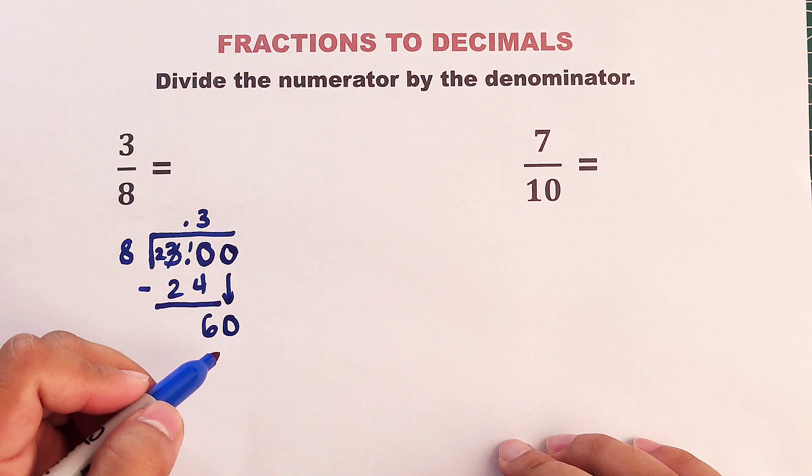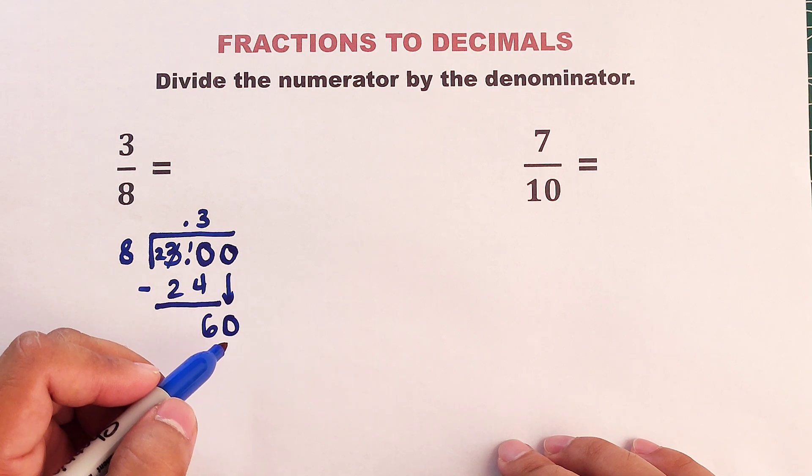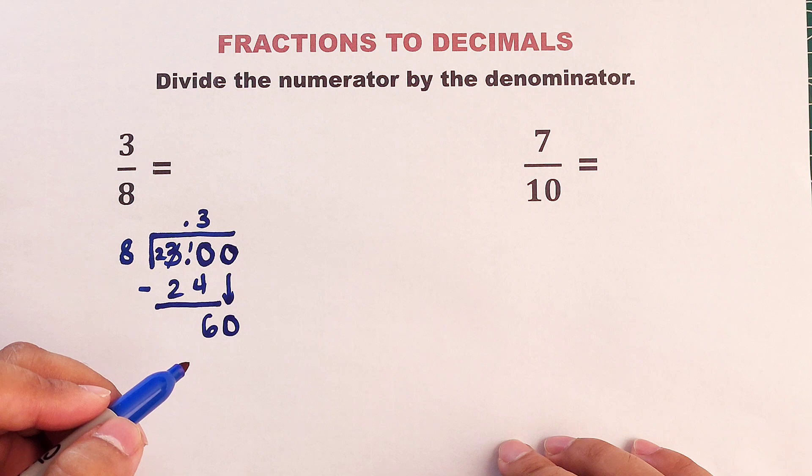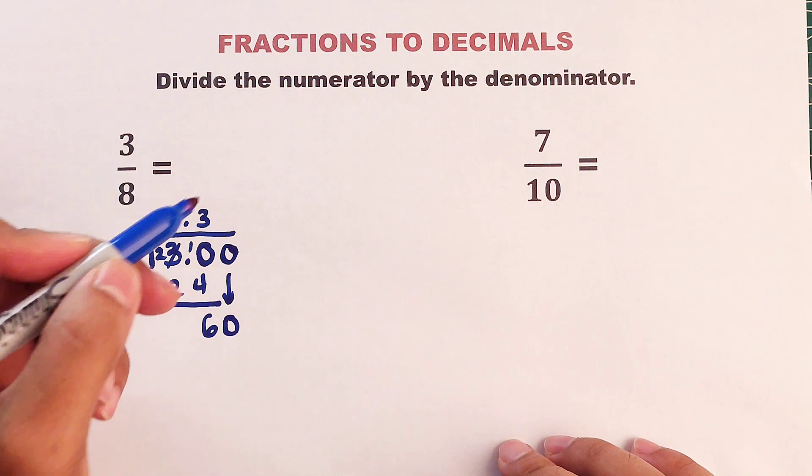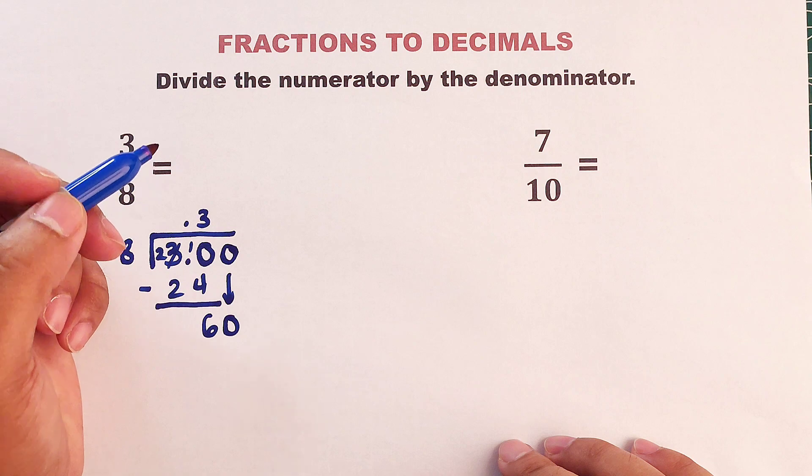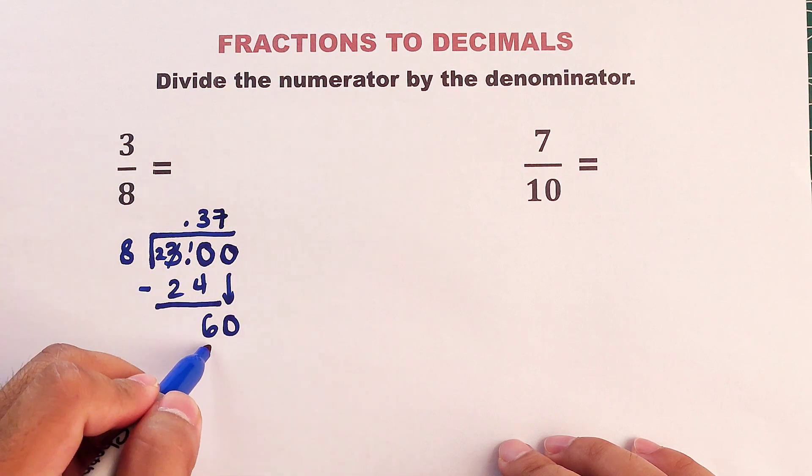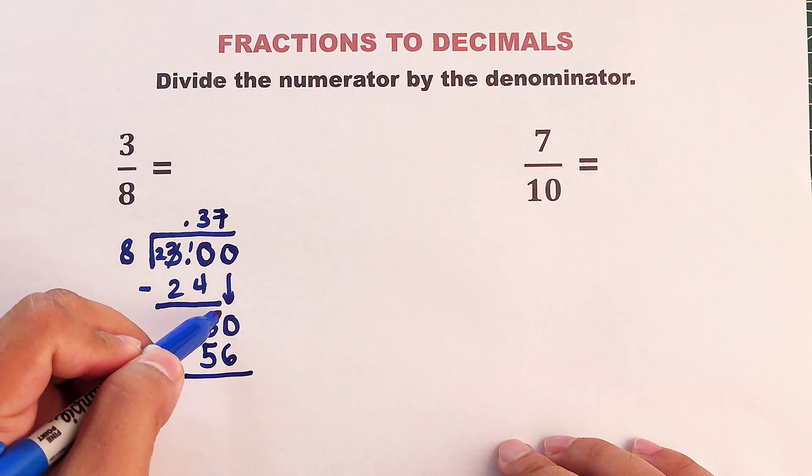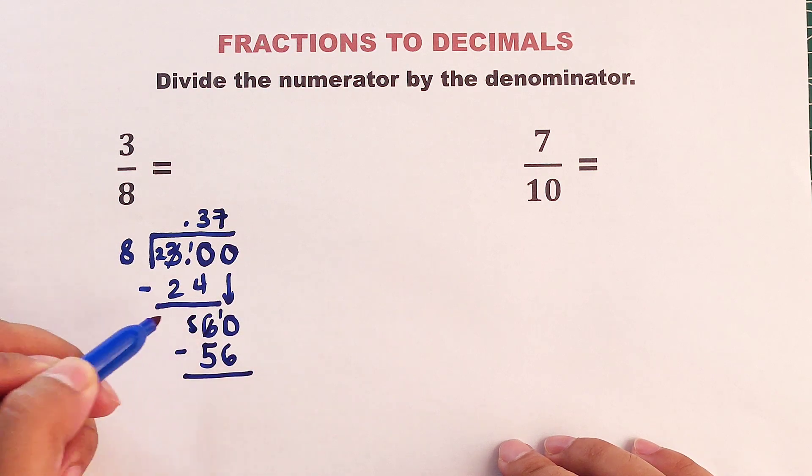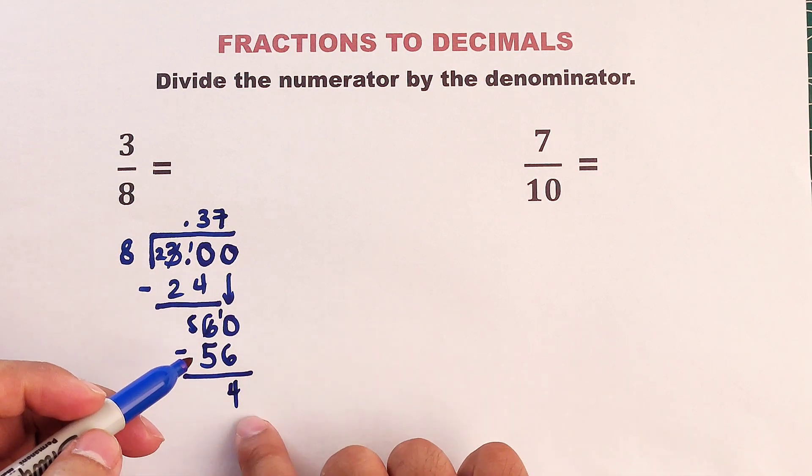So what we're going to do is put another 0 here and then bring down this 0. 60 divided by 8. Think about it. How many 8s do we have in 60? Okay. We have how many? We have 7. Then 7 times 8. The answer is 56. So we will subtract, carry 1, borrow it to 1. 10 minus 6 rather is 4. And this is 0. So we still have a number here.